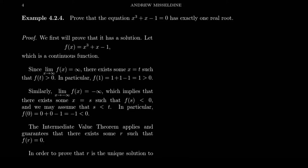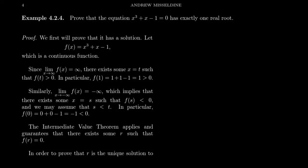In this video, we're going to prove that the equation x cubed plus x minus 1 equals 0 has exactly one root — one solution to this polynomial equation. This is similar to a problem we've approached previously in this lecture series. We showed, using the intermediate value theorem, that a solution exists. Now we're going to show it has exactly one solution: at least one, and also at most one — that's what's new in this video.